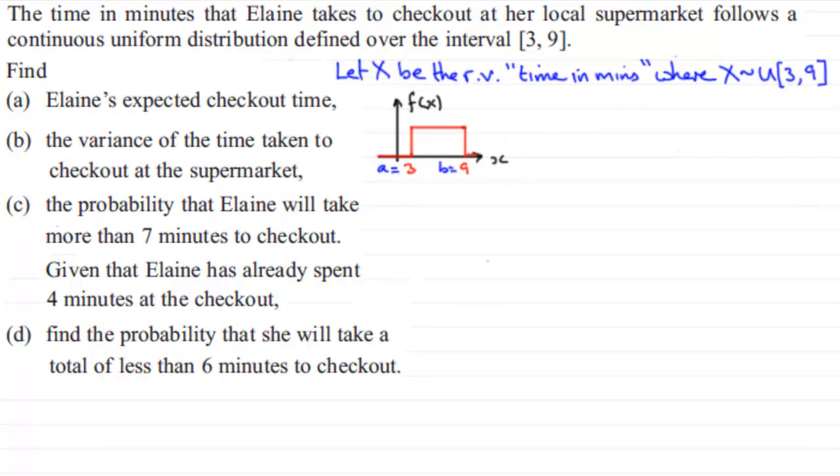Now, in the first part of the question, part A, we've got to find Elaine's expected checkout time, E of X as we often call it. And you should be familiar that for a uniform distribution, E of X is always the midpoint between A and B. So, in other words, it's A plus B divided by 2, a formula that you should be familiar with. So, in this example, it's just going to be 3 plus 9, all divided by 2, which is clearly 6.